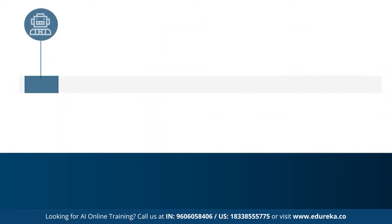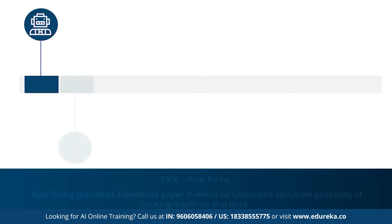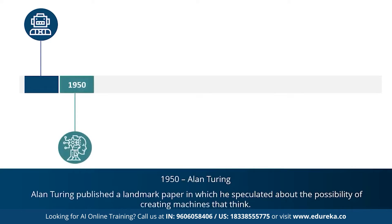The concept of AI goes back to the classical ages. Under Greek mythology, the concept of machines and mechanical men were well thought of. An example is Talos — a giant animated bronze warrior who was programmed to guard the island of Crete. In 1950, Alan Turing proposed the Turing test, which determines whether or not a computer can intelligently think like a human being. The Turing test was the first serious proposal in the philosophy of artificial intelligence.